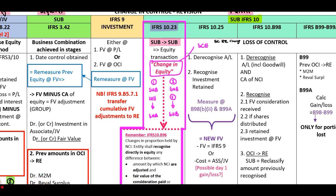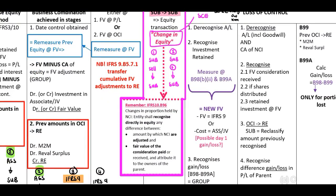When there is a change in ownership, you will have to apply IFRS 10 B96. This paragraph indicates that for changes in proportion held by the NCI, the entity shall recognize directly in equity any difference between the amount by which the NCI is adjusted and the fair value of the consideration paid or received, attributable to the owners of the parent. That difference should be recognized as your change in equity in your statement of changes in equity.